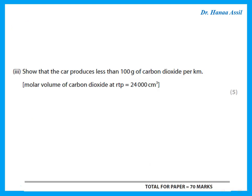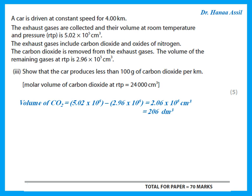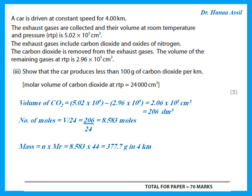To show the car produces less than 100 g of CO₂ per km: the total exhaust gas volume minus the volume after CO₂ removal (2.96 × 10⁵) gives the volume of CO₂. Dividing by 24 gives moles, then multiplying by the Mr gives the mass of CO₂ for 4 km. Dividing by 4 gives the mass per kilometer, which is below 100 g/km. That is the end of this paper.